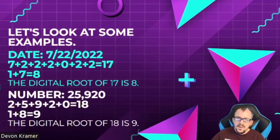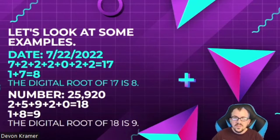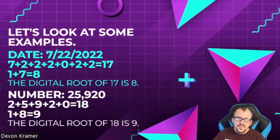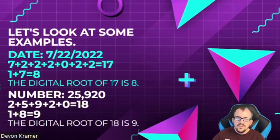The number 25,920: if you take two plus five plus nine plus two plus zero, it's going to be 18, and one plus eight is going to be nine. So you're just crushing it down to where you have one digit left. That is your digital root — the digital root of 25,920 is nine.